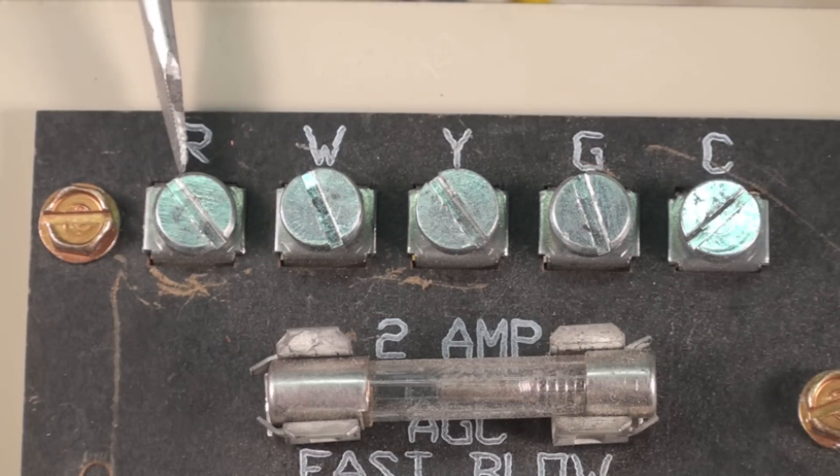And then if there was continuity between R and G, then the fan, the indoor fan would run. That's what each of them are for.